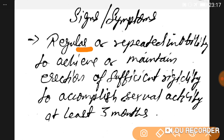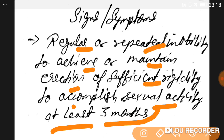The signs and symptoms of erectile dysfunction include regular or repeated inability to achieve or maintain an erection of sufficient rigidity to accomplish sexual activity for at least three months. Remember — not one day, not five days, not one month, but a history of at least three months of inability to get a proper erection.